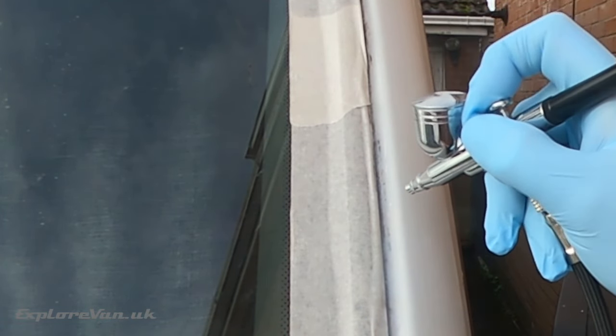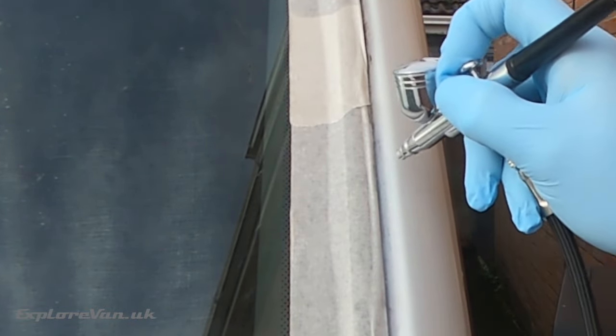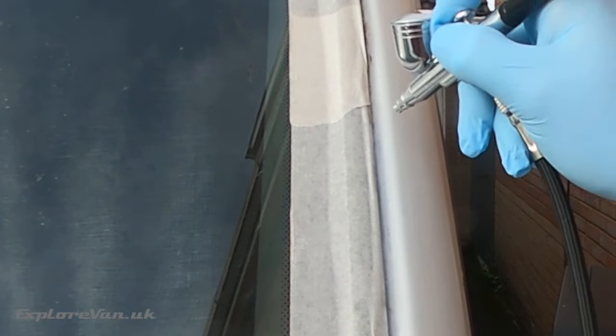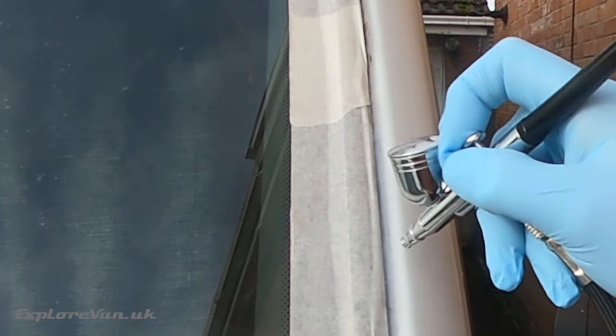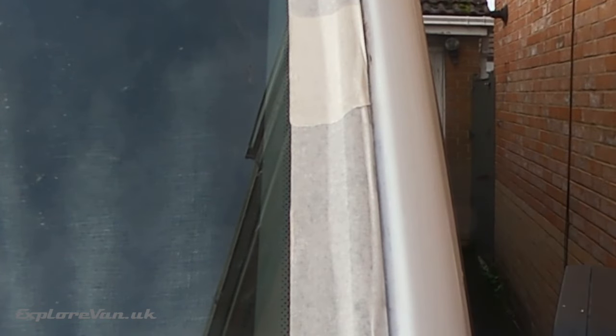As you can see, because of the control we have over the paint, we only have to put a small amount of masking in place to protect the windscreen. Much easier than what's necessary with a rattle can. And whilst we could use a brush, we've found that hard to get a nice thin layer and a good finish.